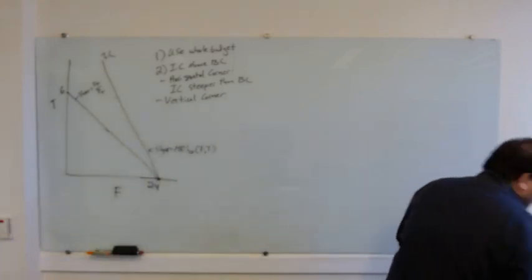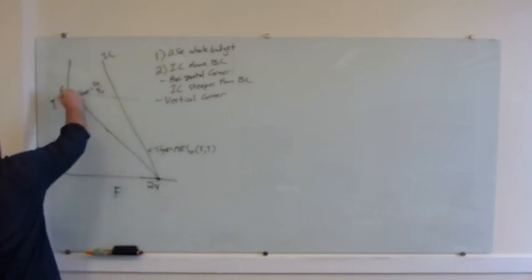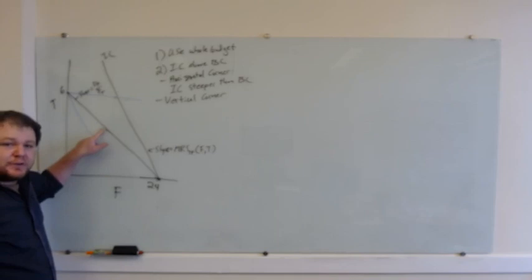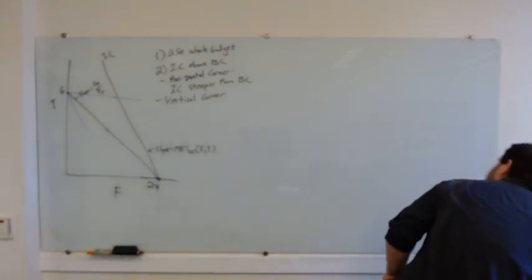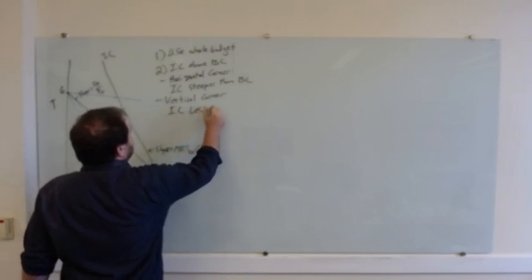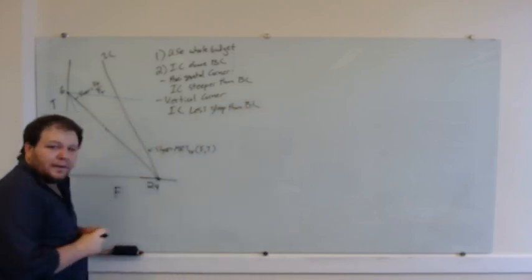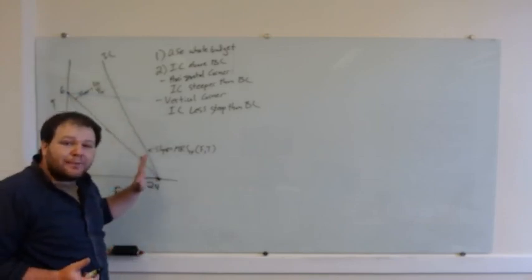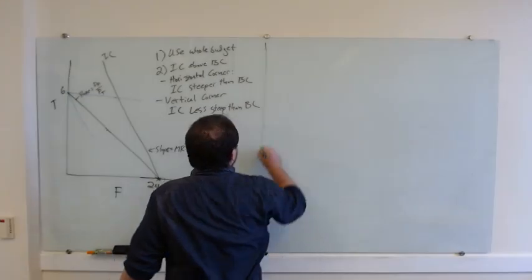On a vertical corner, if the indifference curve slope is steeper there's going to be an area above the indifference curve and below the budget constraint. So on a vertical corner we actually need the indifference curve to be less steep than the budget constraint. Both of these are part of the same rule: geometrically, the indifference curve must be entirely above the budget constraint.